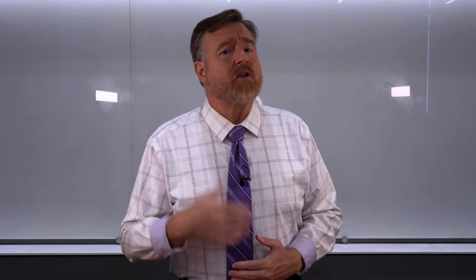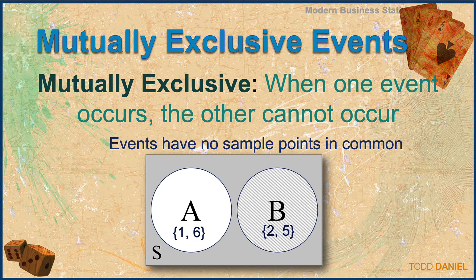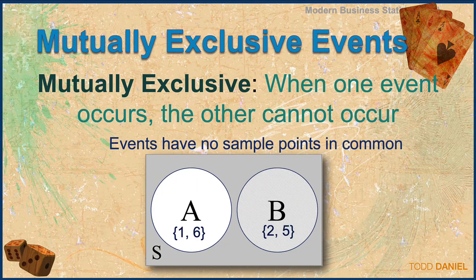Now let's talk about mutually exclusive events. Events are mutually exclusive when if one event occurs, the other cannot occur — these events have no sample points in common. For example, event A is rolling a one or a six on a die; event B is rolling a two or a five. These two events have no sample points in common, therefore they are mutually exclusive.